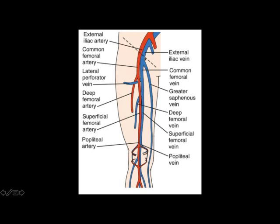The common femoral vein lies medial to the common femoral artery, and the first branch it gives off is the greater saphenous vein. This is a branch that courses superomedially from the common femoral vein and is a conduit often used as a venous graft during coronary artery bypass grafting surgery.